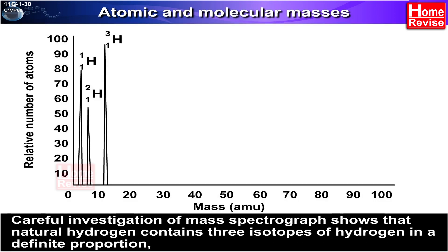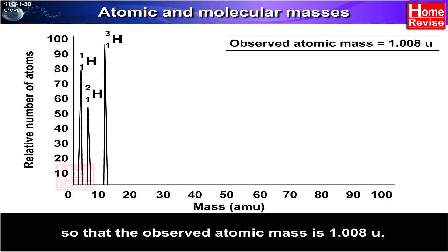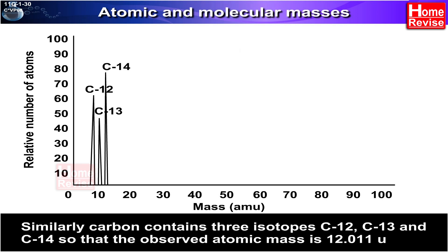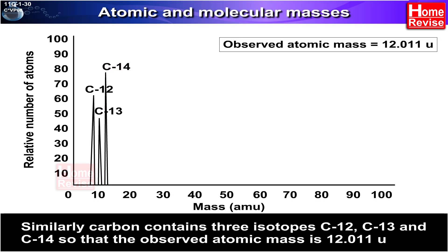Careful investigation of mass spectrograph shows that natural hydrogen contains three isotopes of hydrogen in a definite proportion, so that the observed atomic mass is 1.008 u. Similarly, carbon contains three isotopes — C-12, C-13, and C-14 — so that the observed atomic mass is 12.011 u.